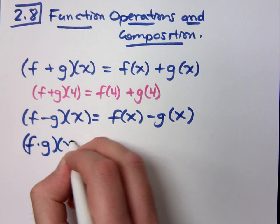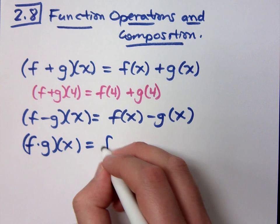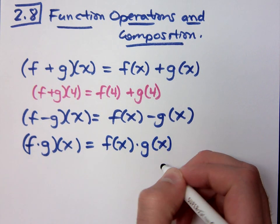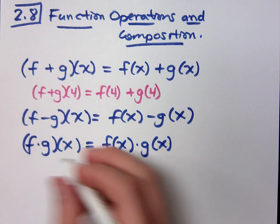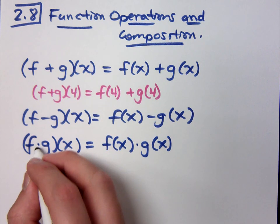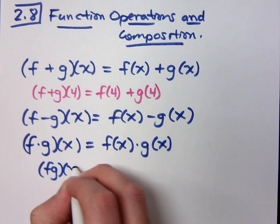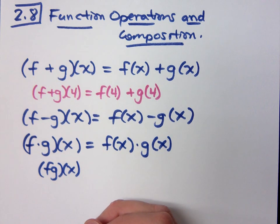If I have f times g of x, I'm going to be multiplying these. Now, the way you may see this in the textbook, you won't see it like f times g with that little dot there. You'll just see it like fg. It's the same thing, just so you're not confused later on.